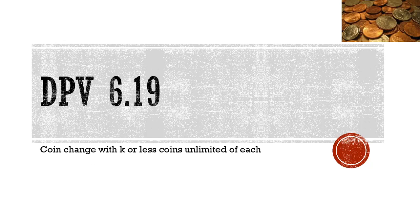Welcome guys to another episode on dynamic programming and today's topic is DPV 6.19 coin change with K or less coins and you're given unlimited of each. So with that, let me dive into the problem.